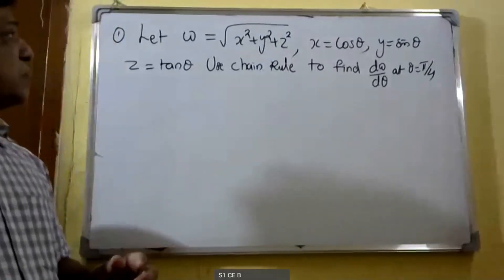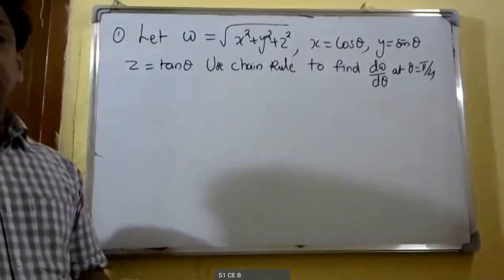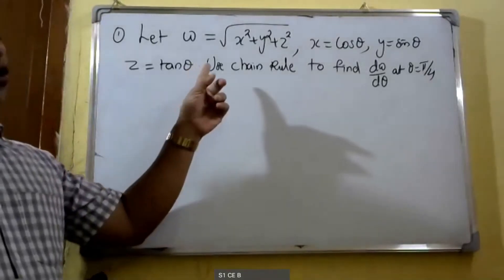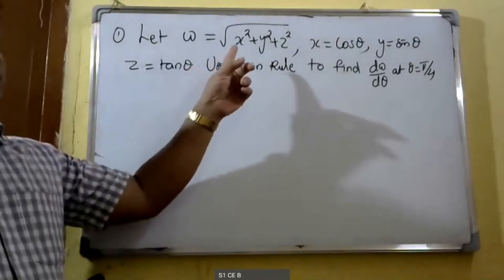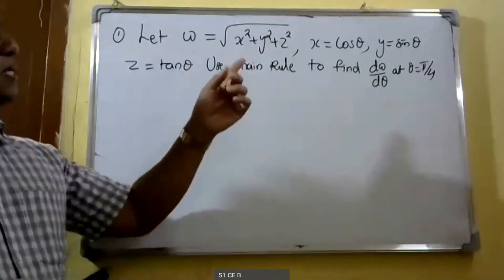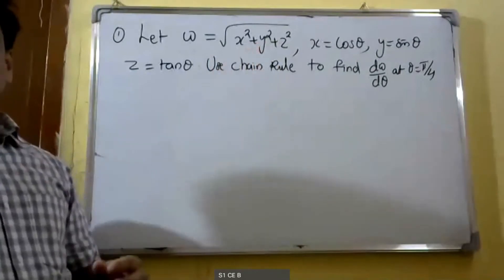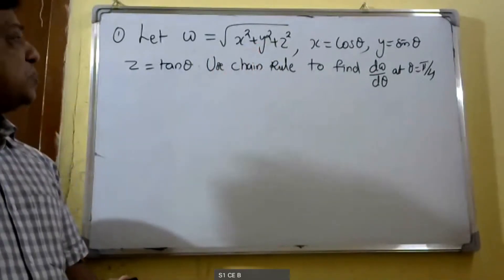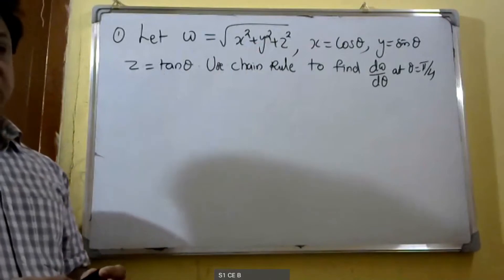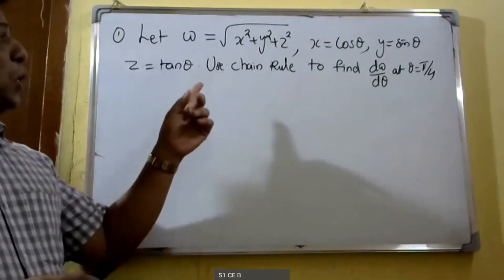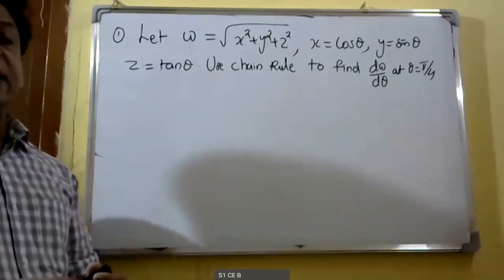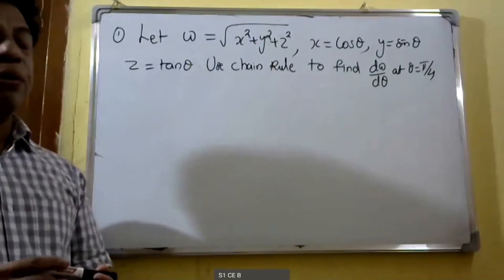Today we will discuss one problem in chain rule. w is equal to root of x² + y² + z², where x is equal to cos θ, y is equal to sin θ, z is equal to tan θ. Use chain rule to find dw/dθ at θ = π/4.